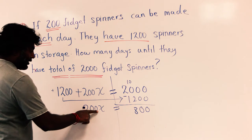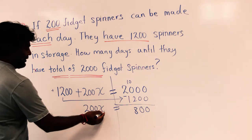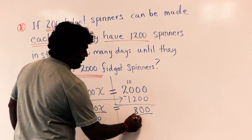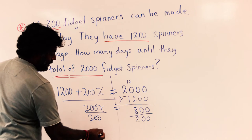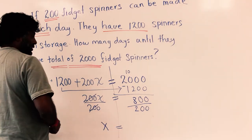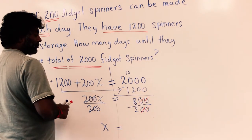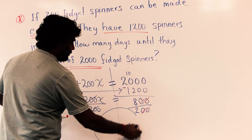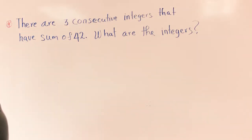Now we have 200x equals 800. This is 200 times x, so if you want to get rid of this 200 — if it's times, we do the opposite, which is division. We're going to divide by 200 on this side, and we have to divide on the other side too. These 200's cancel, which is 1x — you don't need to put the 1, just x. We can cancel the zeros: these two cancel and then these two cancel. How many 2's go into 8? That's 4. So the answer is 4 — it will take 4 more days.